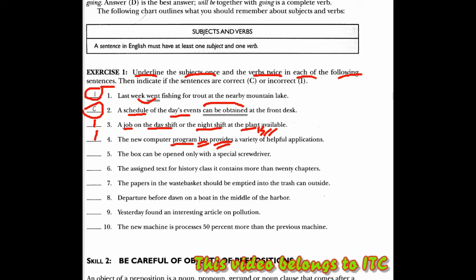Untuk bagian nomor 5, a box adalah subjeknya, can be opened adalah sebagai predikatnya. Kalimat ini benar, correct, karena dia sudah menyatakan subjek dan predikat yang lengkap, disertai dengan frasa prepositional phrase, yaitu frasa kata depan.